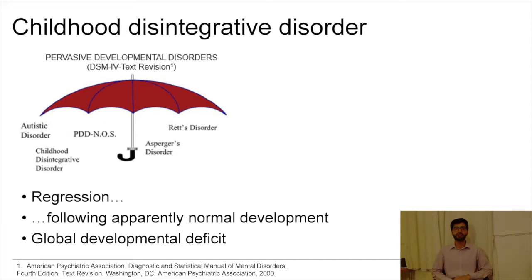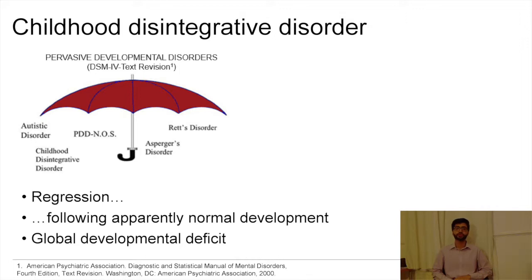However, the defining and distinguishing characteristic of CDD is its onset. It presents with regression — the loss of previously acquired developmental skills — after two or more years of typical development. Compared to classical autism, it affects a broader set of developmental domains, including toileting control and functional motor skills.